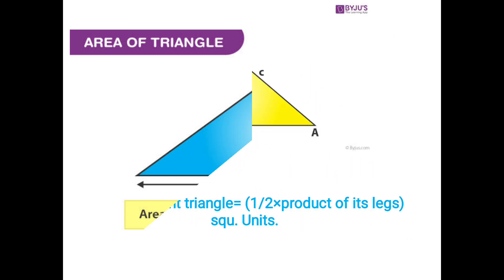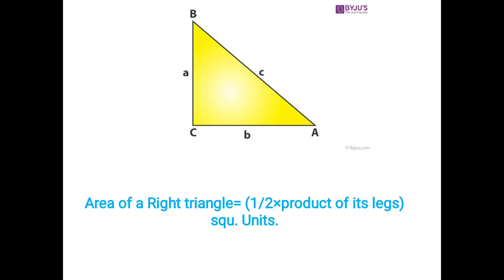The next formula is the area of a right triangle. A right triangle has a 90-degree angle, and the side opposite to it is the hypotenuse. The area of a right triangle is equal to half into the product of its two legs. We cannot use the hypotenuse side; instead we use the two legs — BC and CA. So the formula is: area of a right angle triangle equals half into product of its legs, in square units.